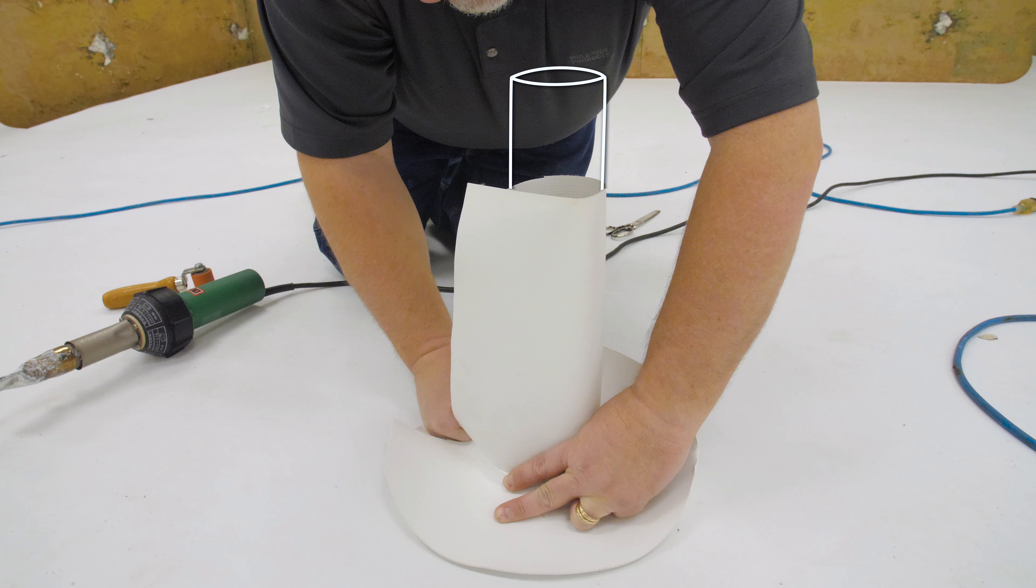If the pipe is taller than the split pipe boot, make a mark on the outside of the pipe at the top of the flashing. Remove the split pipe boot from the pipe.